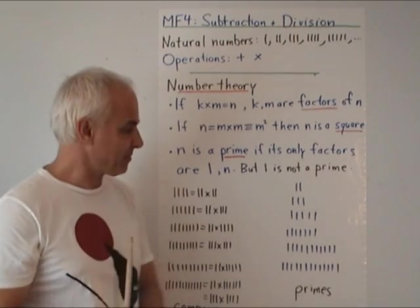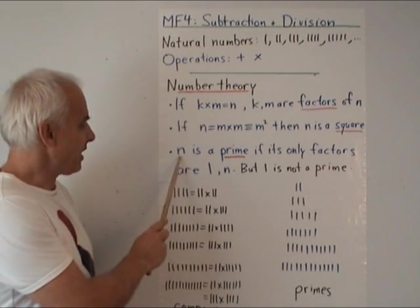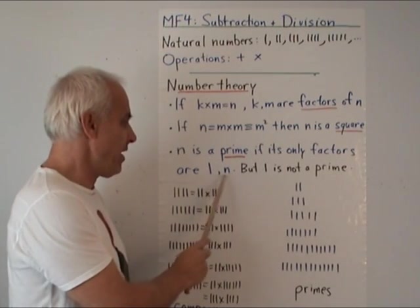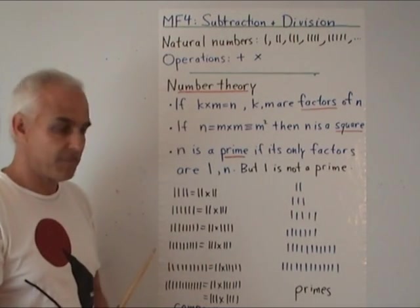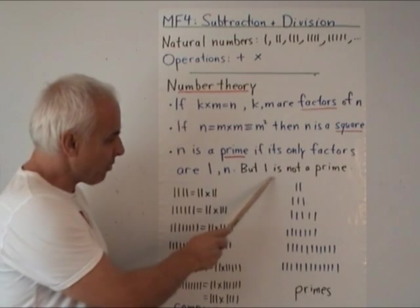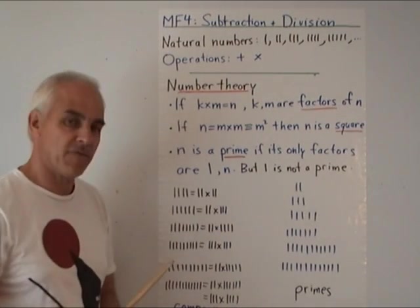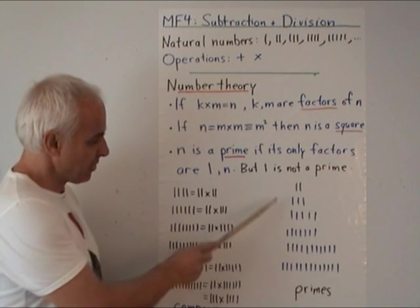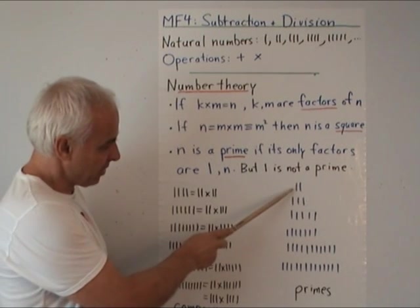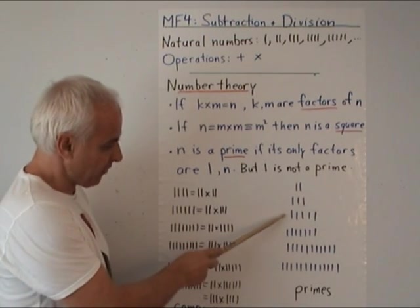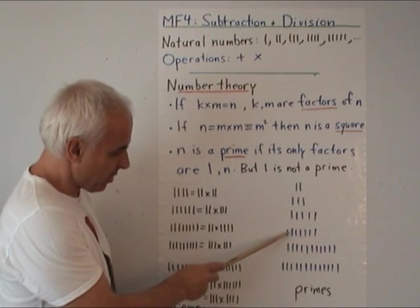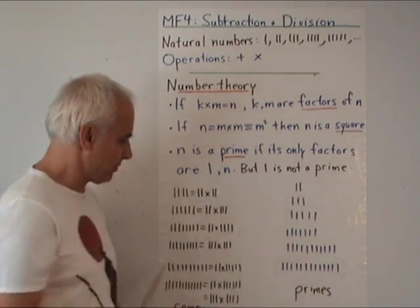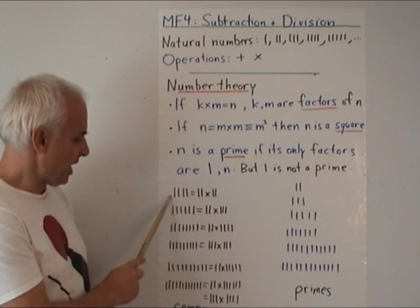Next, N is a prime if its only factors are one and itself. We purposely exclude one from being a prime, so one is not a prime. Here is our list of the first few primes: there's two, there's three, there's five, and then there's another number — one one one one one one one one (seven) — and a few more.